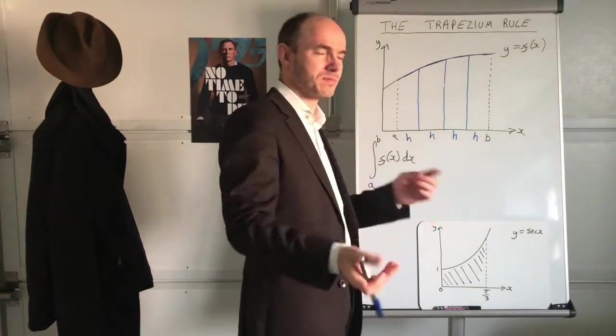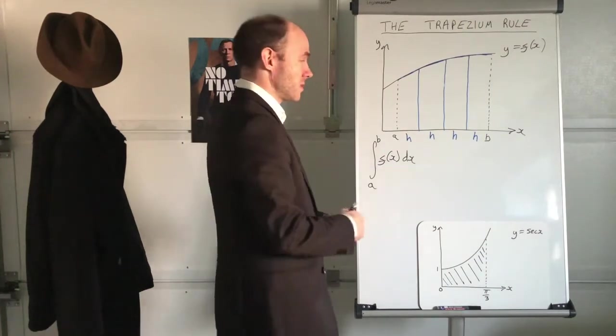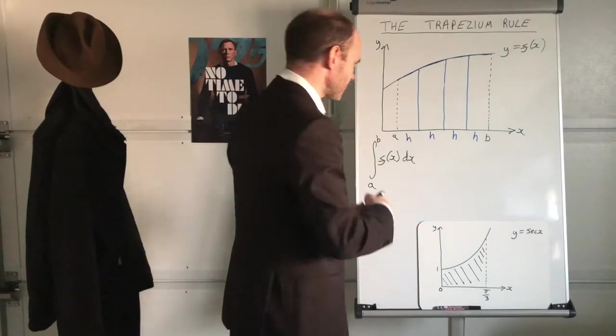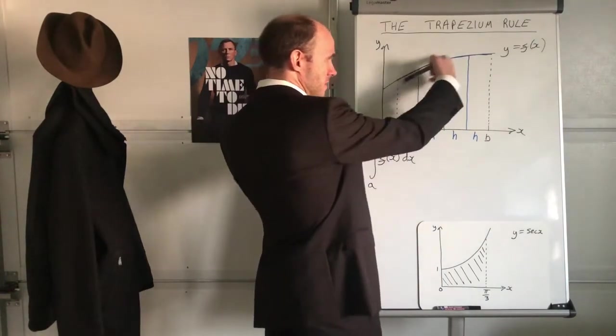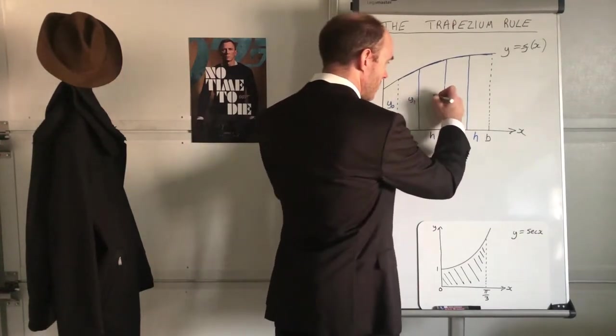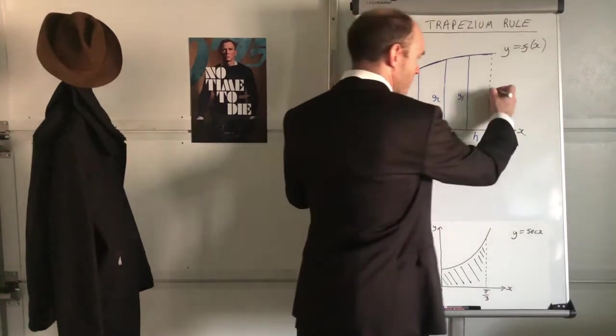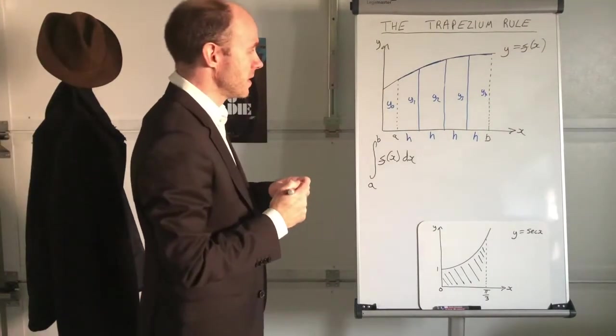The whole thing hinges on you making sure that the strips are of equal thickness, we call them H. So the width of each of these strips is H. What we're going to do is work out what the heights of all these are, they're called ordinates. That is determined by the y coordinate of these points I'm pointing to, so I'm going to call that length y0, y1, y2, y3, and that one would be y4.